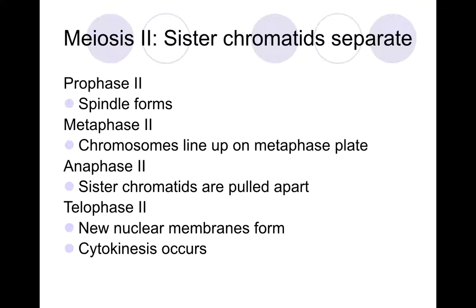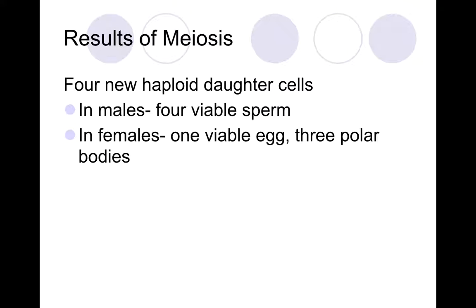In prophase two, the only thing that occurs is that spindle fibers form. In metaphase two, the chromosomes — the sister chromatids — line up in the middle of the plate just like before. In anaphase two, those sister chromatids pull apart. In telophase two, new nuclear membranes form and then cytokinesis occurs. In meiosis, the end result in males is four viable sperm. In females we only get one viable egg, and we account for the other three as what we call polar bodies.